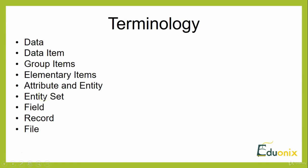The next term is entity set. Entity set means entities of similar attributes forming a similar entity set. Whatever entity you have, a collection of attributes together forms an entity set. It has a number of attributes in it, follows a set pattern, and can be referred to as the entity set.